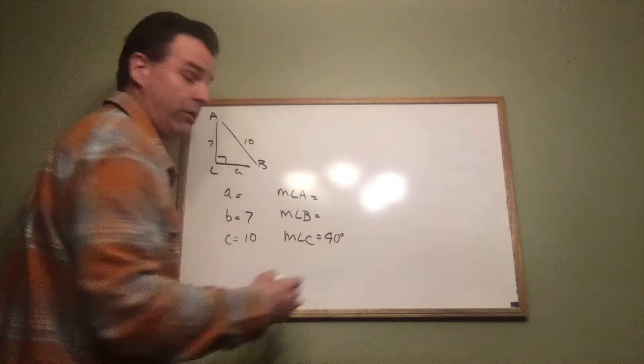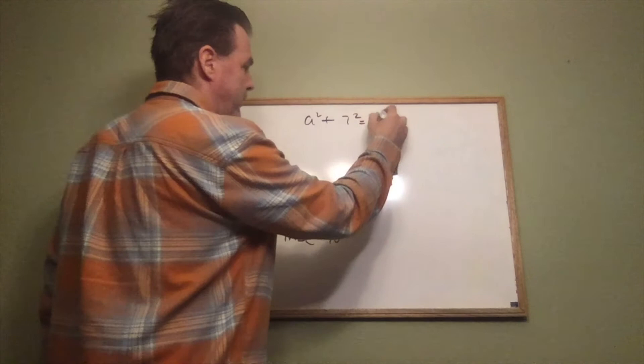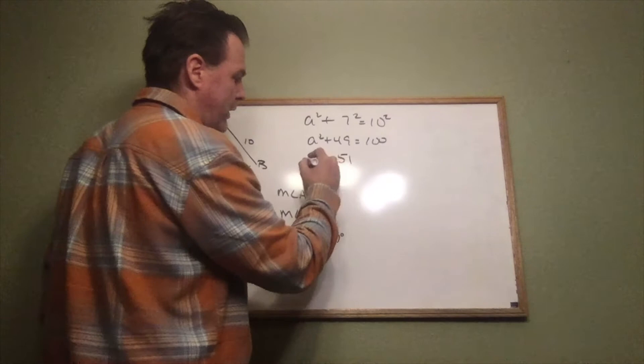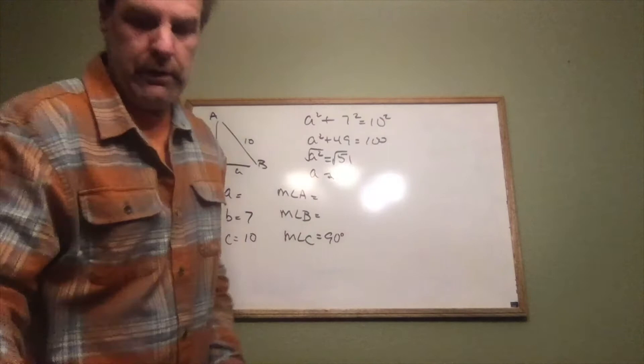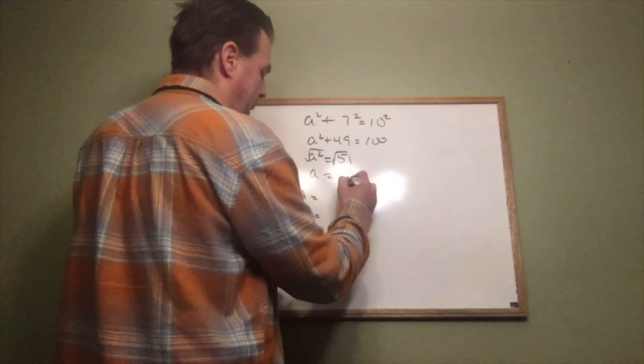Using the Pythagorean theorem: a squared plus 7 squared equals 10 squared, so a squared plus 49 equals 100. Subtracting 49, a squared equals 51, and a equals the square root of 51, which is approximately 7.1. So the missing side a is found.